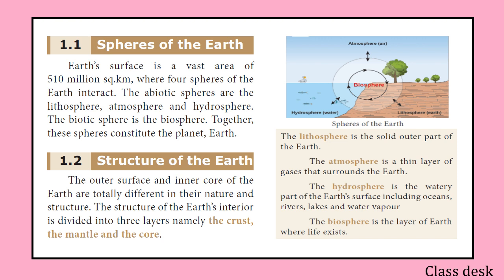The spheres of the earth include the biotic sphere and abiotic sphere. The four main spheres are: hydrosphere, atmosphere, and biosphere — these are biotic — along with the lithosphere.